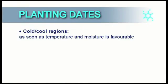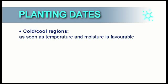In the cold to cool regions, soybeans can be planted as soon as temperature and moisture will allow. Short season maturity group 4 cultivars are not much influenced by day length and will flower more or less at the same growth stage at different planting dates.